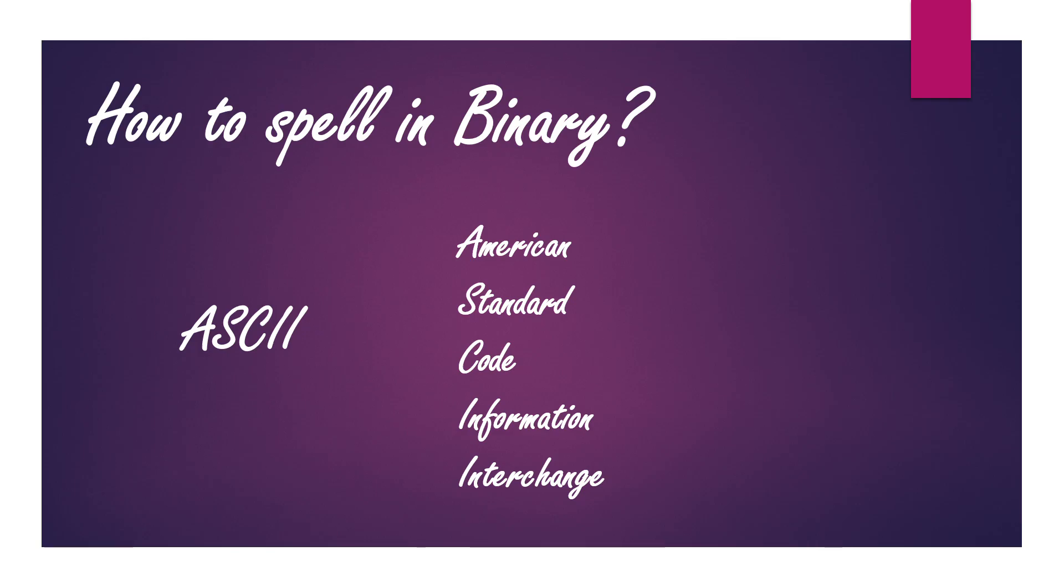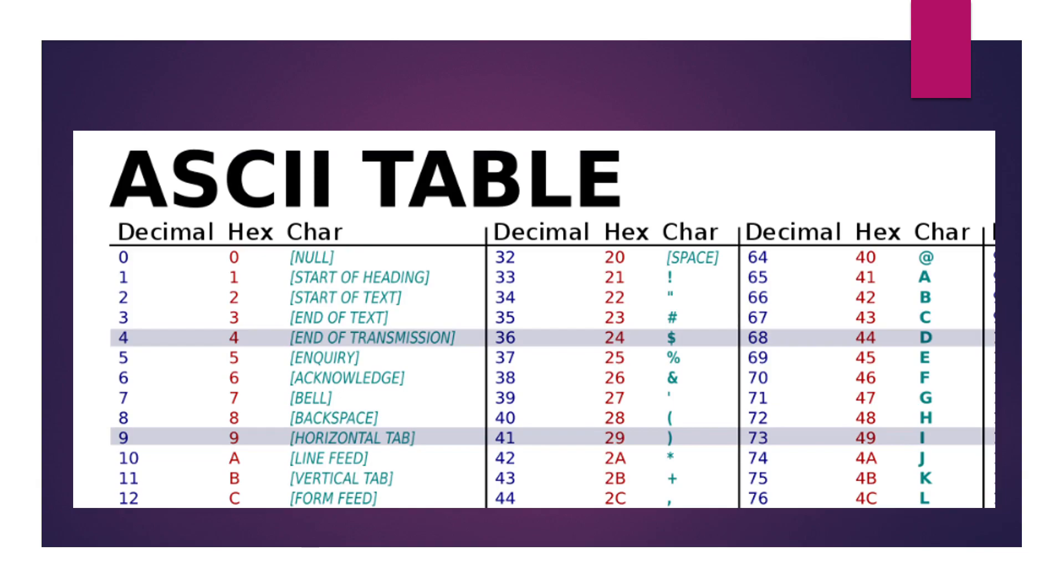And I just copied a table from Wikipedia just to show you how a computer actually understands this letter A. The ASCII code for A is 65 in decimal. And you know how we can convert this decimal into binary.